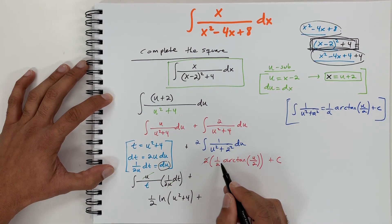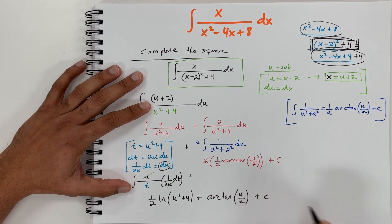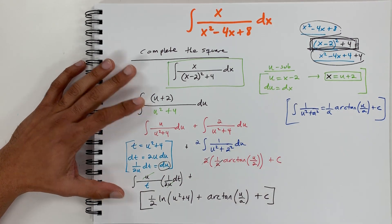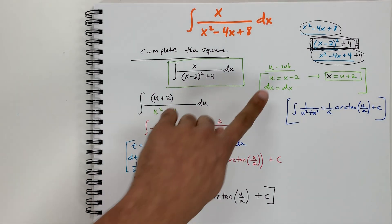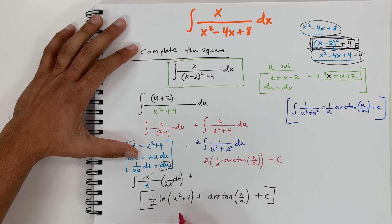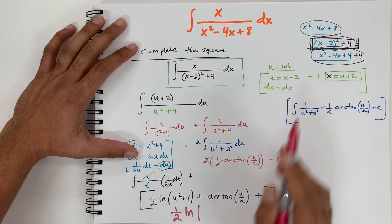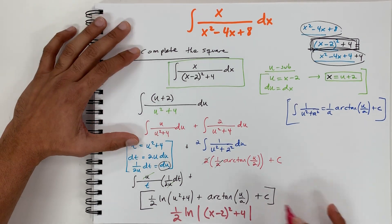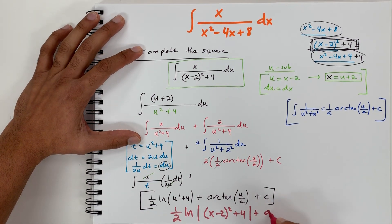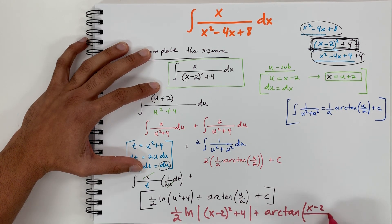Combining both parts, and back-substituting u equals x minus 2, the full answer is: 1 half ln of |(x minus 2) squared plus 4|, plus arctangent of (x minus 2) over 2, plus C.